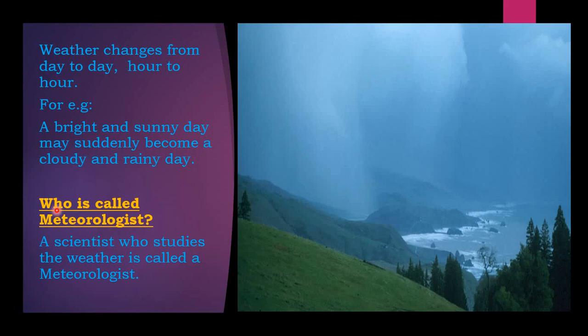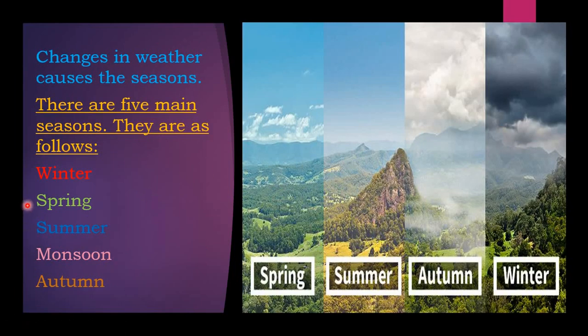This is all about the characteristics of weather. Changes in weather cause the seasons. There are five main seasons: winter, spring, summer, monsoon, and autumn.